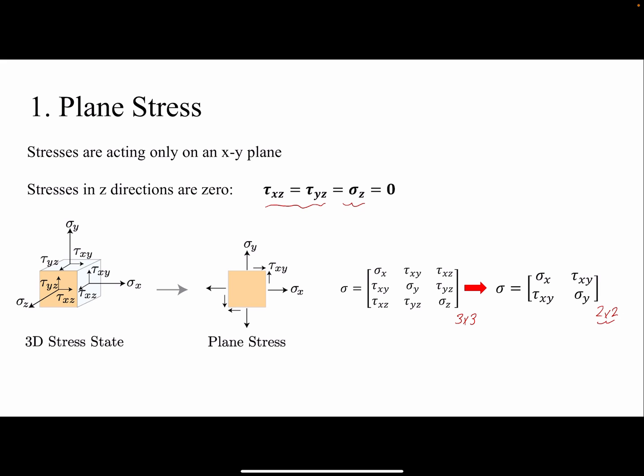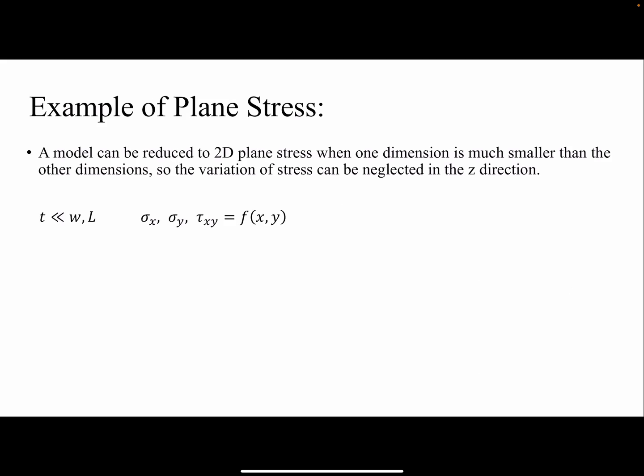There is a significant simplification when we make a plane stress assumption. One important thing to remember is that plane stress is not plane strain — we do have strains in the Z direction. Epsilon ZZ is not zero because of the Poisson effect; whenever we have sigma X or sigma Y, we will have strain in the Z direction as well.